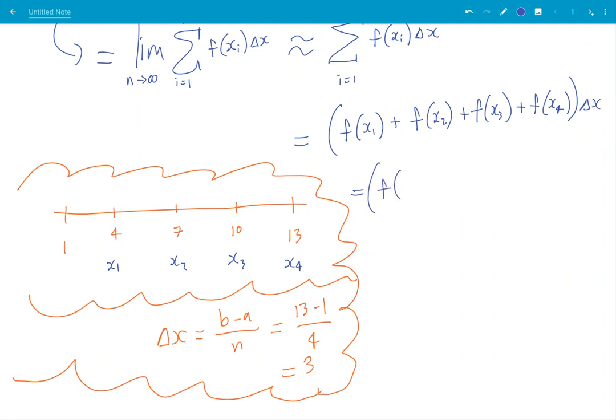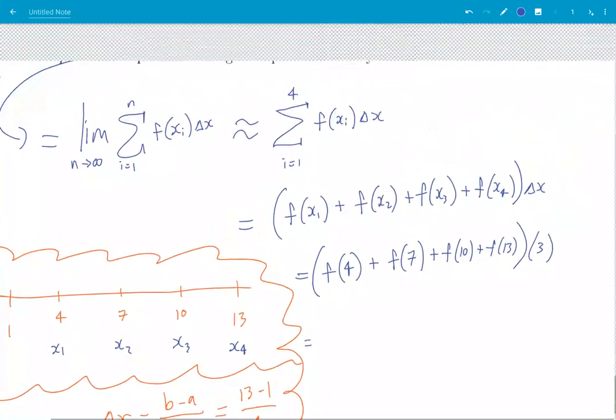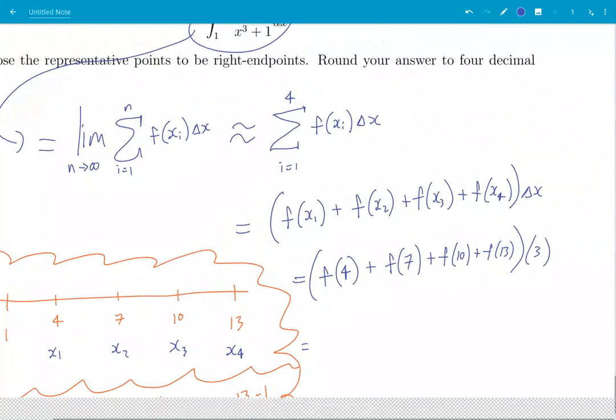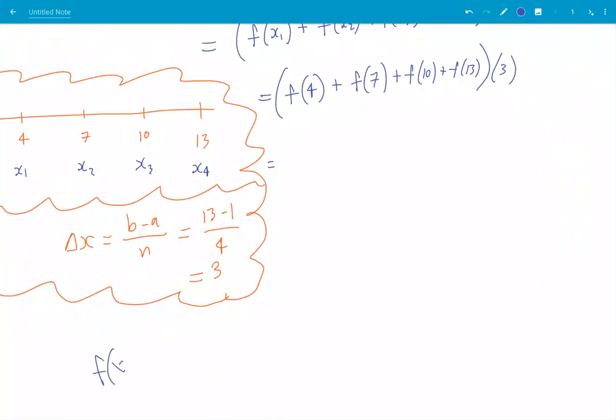So this is f of 4 plus f with 7 plugged in plus f with 10 plugged in plus f with 13 plugged in, all times delta x which is 3. Let's make a bit more space. What was the function? Function was x squared plus 1 over x cubed plus 1. So let's write that down here.